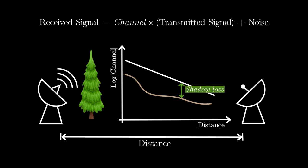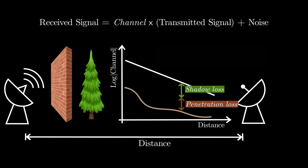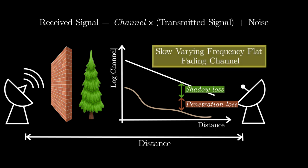Note that there can be multiple objects along the signal path, in which case the channel would get attenuated by the sum of all the losses. This type of channel is called slow-varying frequency flat fading channel.